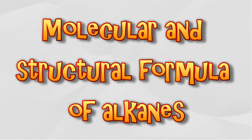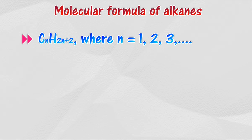Molecular and Structural Formula of Alkanes. Alkanes can be represented by the following general formula: CₙH₂ₙ₊₂. The symbol N represents the number of carbon atoms in an alkane molecule.